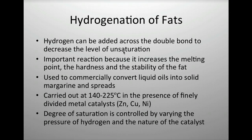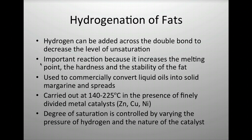Hydrogenation of fats: we've talked about how double bonds can undergo addition reactions. If we add hydrogen across a double bond, we create a single bond — a saturated carbon. Hydrogen can be added across the double bond to decrease the level of unsaturation, decreasing the number of double bonds. This makes the fat more stable because it increases the melting point, making it more like a solid. This is how we turn liquid oils into solid ones — for example, canola oil is used in margarine and other spreads. Hydrogenation solidifies it and gives it a longer shelf life.